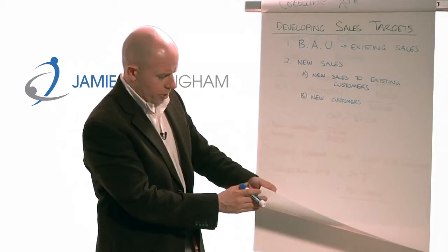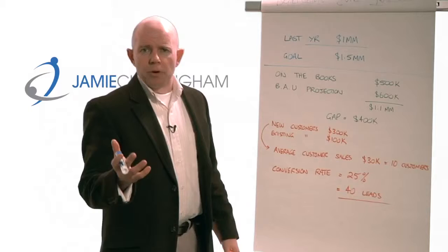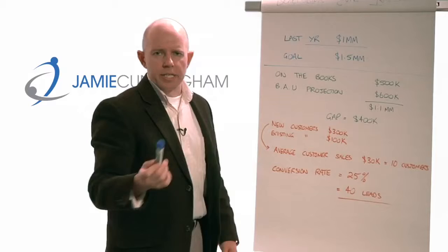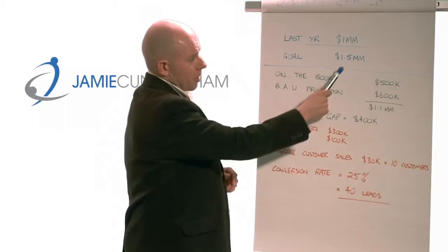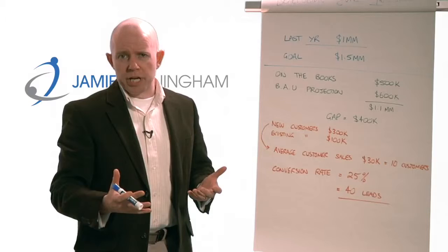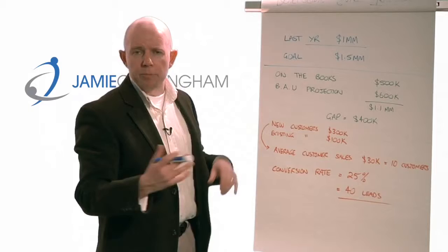Let's take a look at some numbers to put some context to all this. In this example, last year you did a million dollars in revenue and sales, and let's say this year you want to increase by 50% — a nice healthy increase — to $1.5 million. So the first thing we've got to look at is what is that Business As Usual projection? I've broken this into two areas.